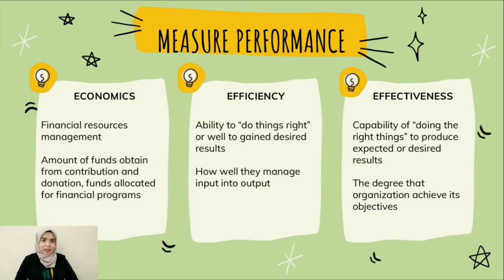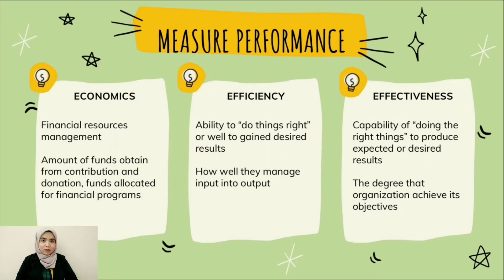The second criteria is efficiency, defined as the ability to do things right, or to do things well, to gain the desired result. This can be seen in how well the organization converts their input into output, and how well the organization carries out their function.